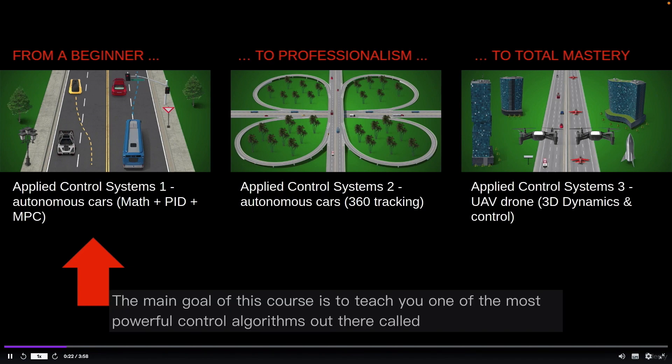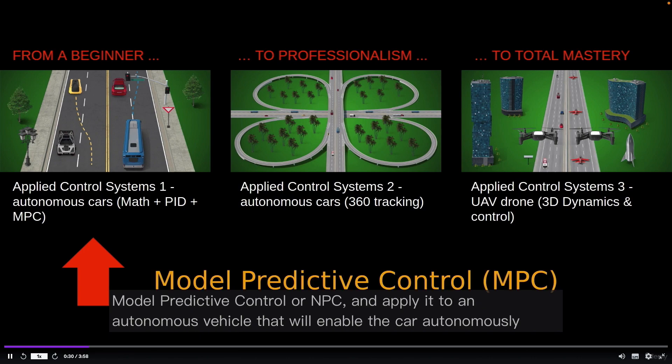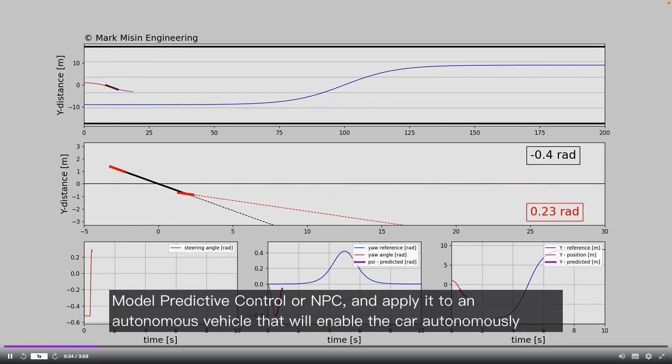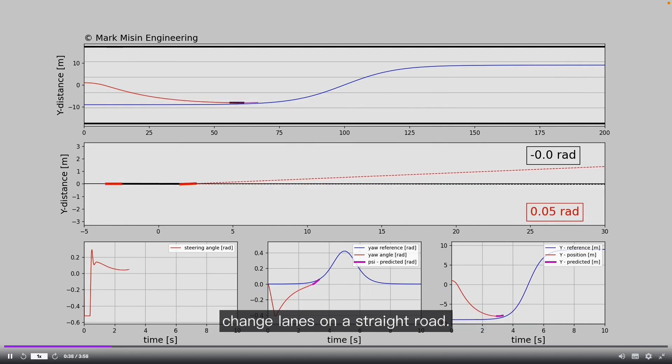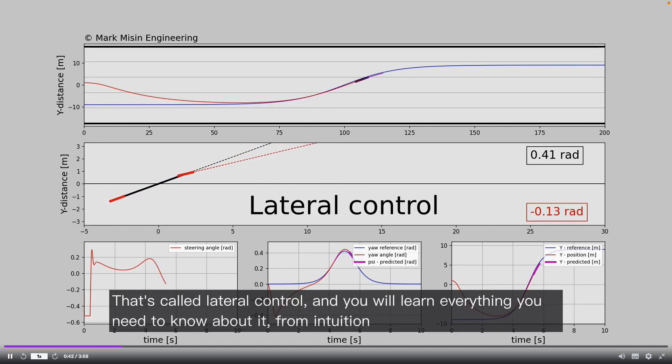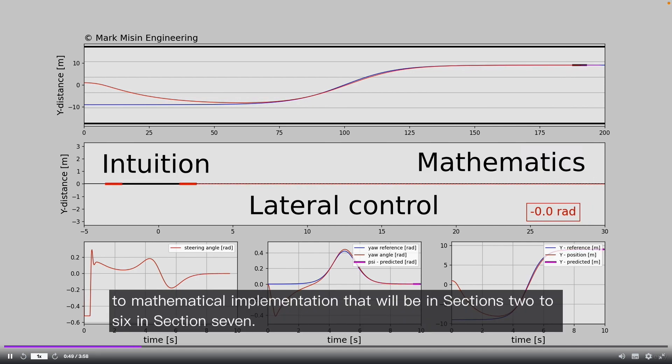The main goal of this course is to teach you one of the most powerful control algorithms out there called Model Predictive Control or MPC and apply it to an autonomous vehicle that will enable the car to autonomously change lanes on a straight road. That's called lateral control and you will learn everything you need to know about it from intuition to mathematical implementation.